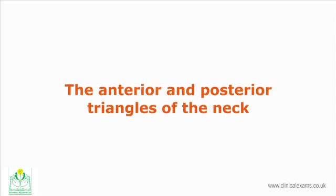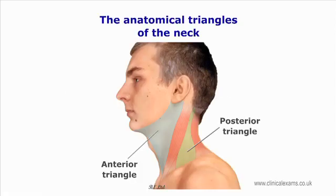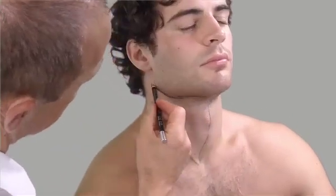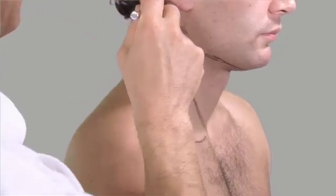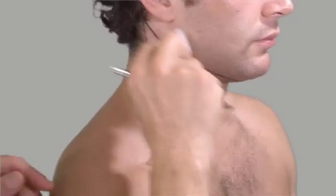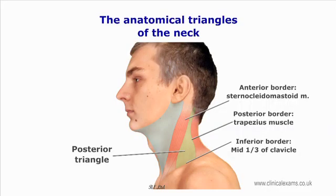Before dealing with the upper limb, let us first define the anterior and posterior triangles of the neck. The anterior triangle has a broad superior border and a narrow apex inferiorly. Its borders are anteriorly the trachea, superiorly the digastric muscle — or a line extended from the mental protuberance to the mastoid process — and as the posterior border, the oblique sternocleidomastoid muscle. Conversely, the posterior triangle has a broad base inferiorly and a narrow apex superiorly. Its borders are anteriorly the sternocleidomastoid muscle, the inferior border is the middle one-third of the clavicle, and the posterior border is the anterior fibers of the trapezius muscle.